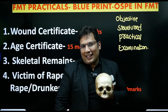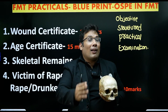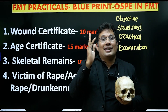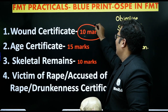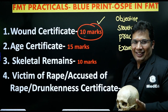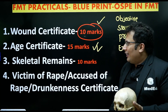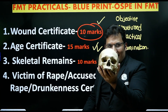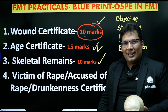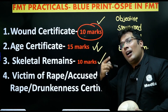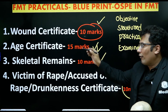For the practical examination in forensic medicine, we call it OSPIN FMT. There are 8 important exercises as per the CBME curriculum. The first is the wound certificate, also known as the injury certificate. The second is the age certificate, around 15 marks. The third is skeletal remains examination, very interesting, around 10 marks. The fourth is the victim of rape, or accused of rape, or drunkenness certificate, around 10 marks.